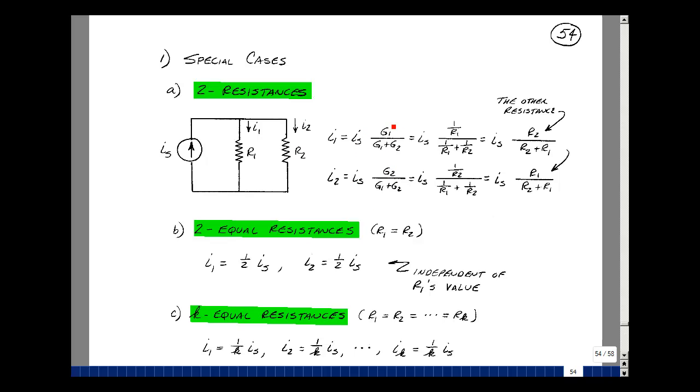Now, let's put in the fact that G1 is 1 over R1, and G2 is 1 over R2. Let's multiply the numerator and denominator by R1, R2. Again, just multiplying by 1. R1's cancel, we just get R2. R1 times R2 here would just give me R2, and R1 times R2 divided by R2 would give me R1.